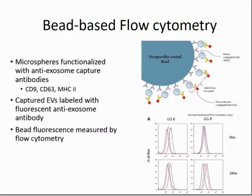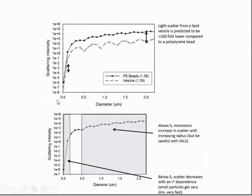One of the most common ways to look at extracellular vesicles is using macrospheres. Macrospheres can bind antibodies that bind proteins on the vesicles, making the vesicle fluorescent so it can be measured by a fluorometer. In this case, refractive index and size are really important because above or below a specific threshold of your wavelength, the reading may not be accurate.